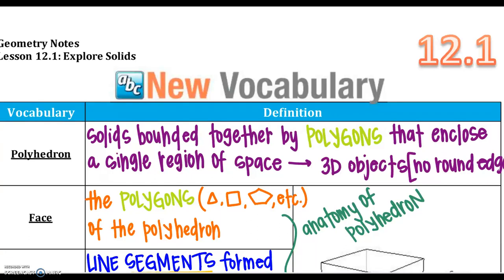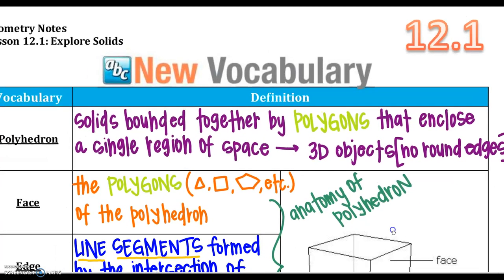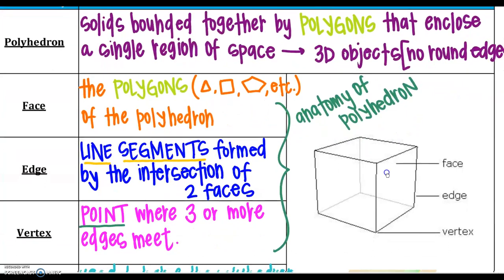Hey there, welcome to section 1 of chapter 12. This chapter is exploring solids, so we're going to explore some 3D objects. Going through our vocab, a polyhedron is just a solid bounded together by polygons that enclose a single region of space. So those 3D objects, a polyhedron has no round edges, and we'll talk a little bit more about that here in a little bit.